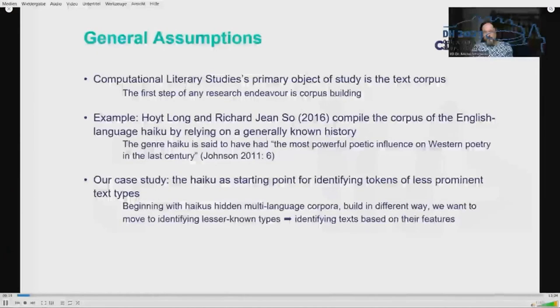In this talk, I outline the contribution of three work packages of the Horizon Group 1 Project Computational Literary Studies Infrastructure. In computational literary studies, the primary object of study is the corpus of texts.